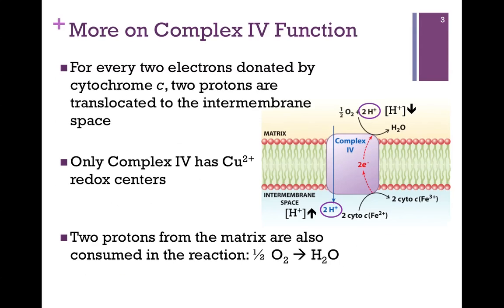Let's just briefly look at what happens at Complex 4. It takes the electrons from cytochrome C and passes those to oxygen. In the process, it's going to pump two protons for every two electrons. An interesting point is that Complex 4 is the only member of our chain that actually has a copper redox center.